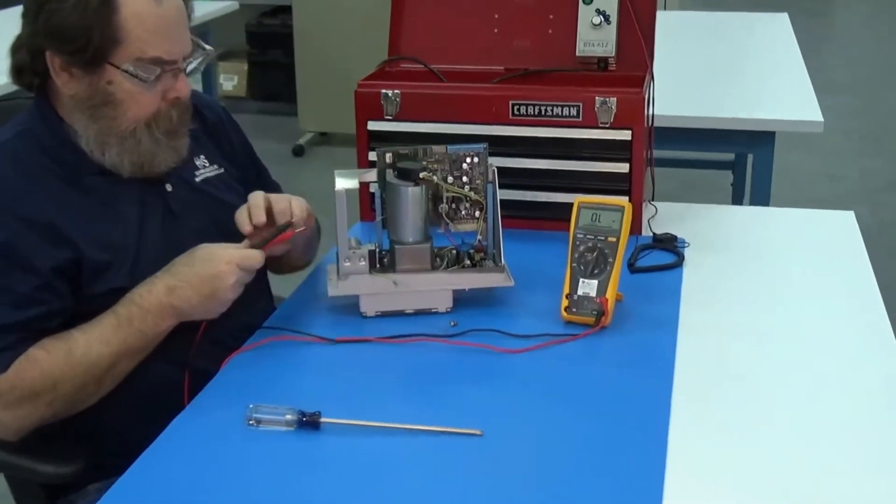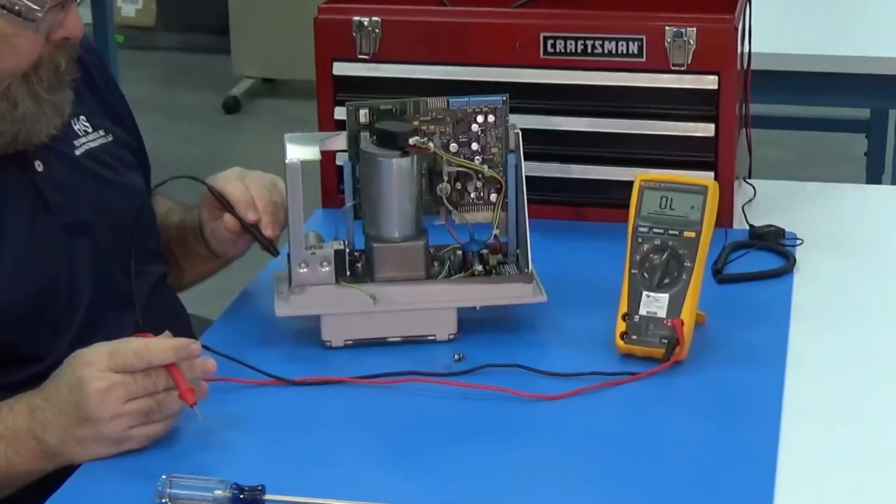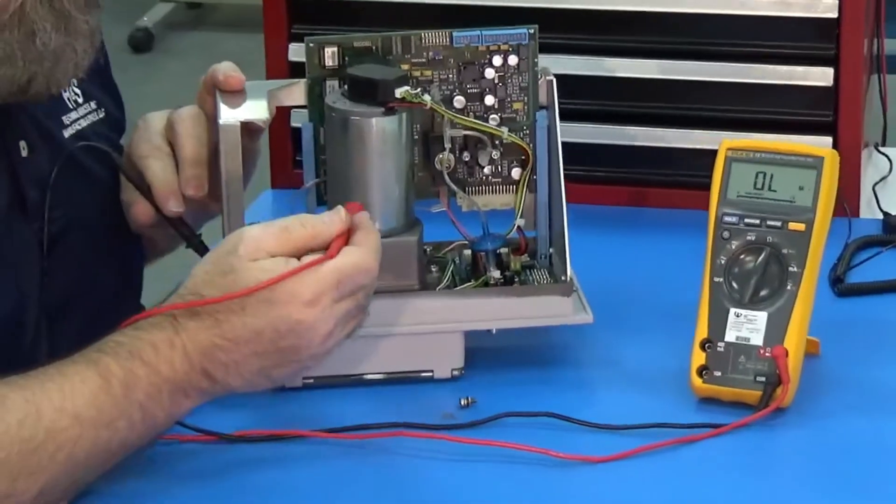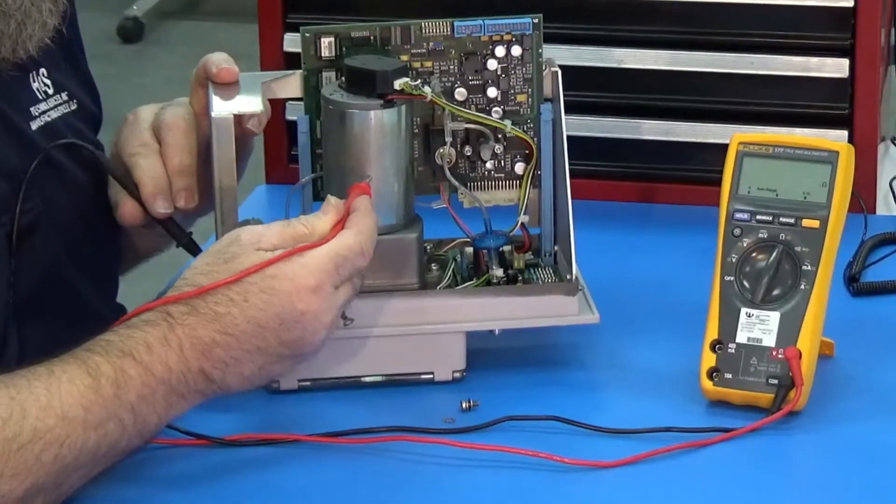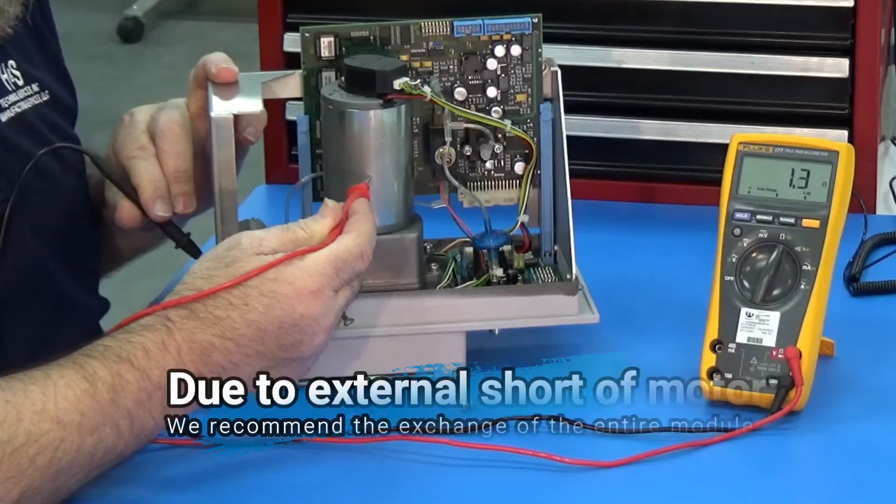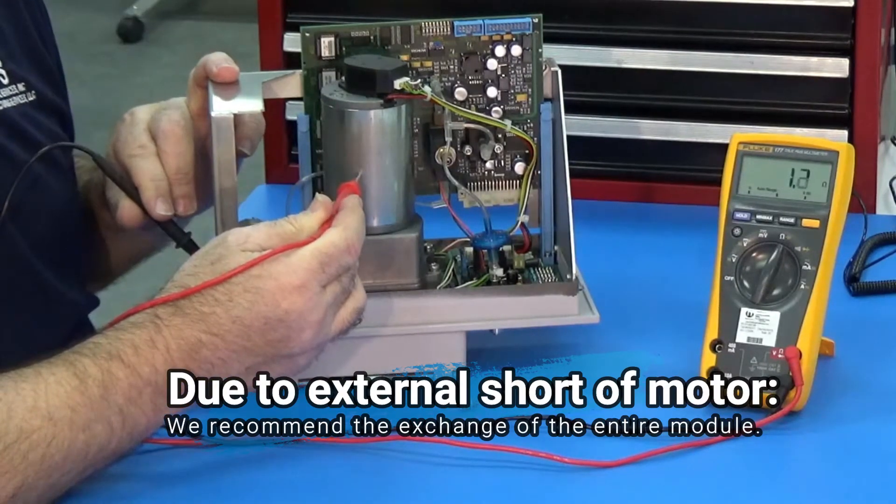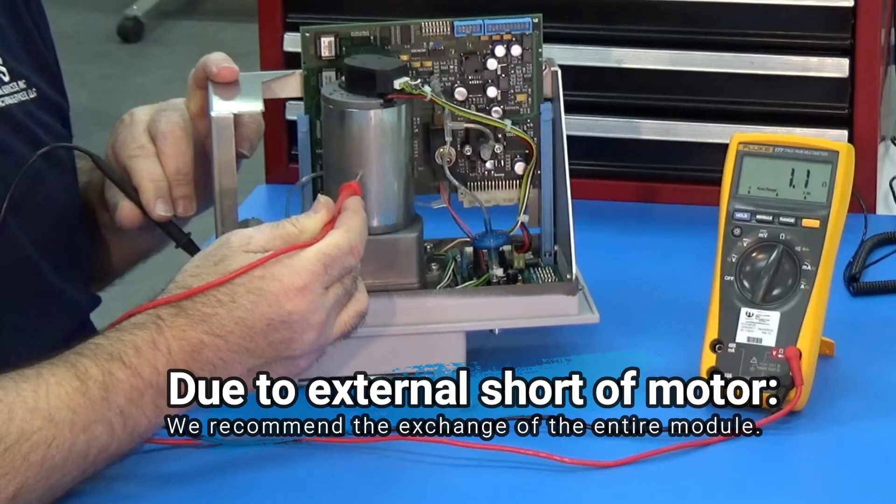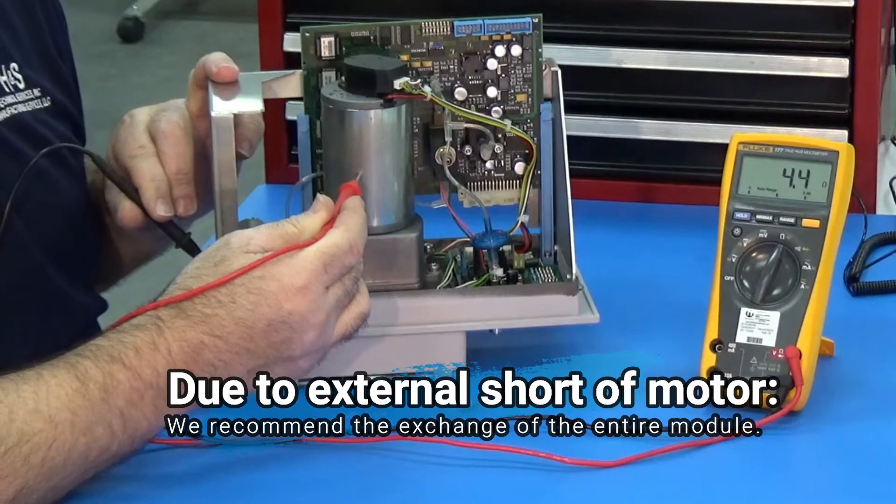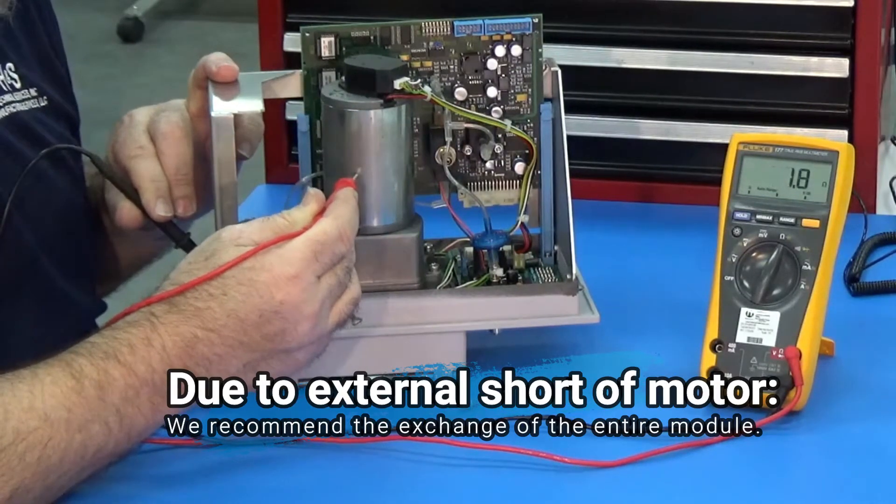And we're going to go through again and go from the chassis of the module to the chassis of the motor. And you can see that this one here has a short to ground. It measures some resistance and it is shorted and the Biomed will need to replace this entire module.